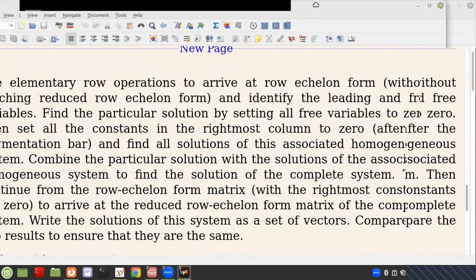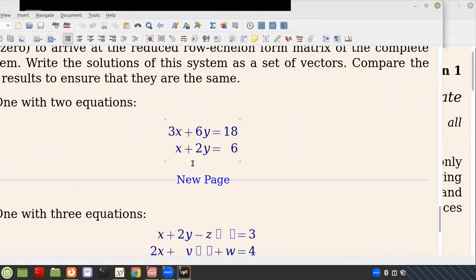Okay, then here's one that has a long instruction. What it's basically going to say is reduce this to echelon form, then set the free variable to zero to find the particular solution. Then go back to the system in echelon form, set the constants to zero, solve the homogeneous system, write down the homogeneous solution,